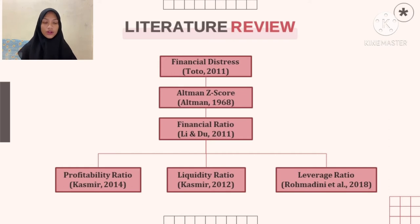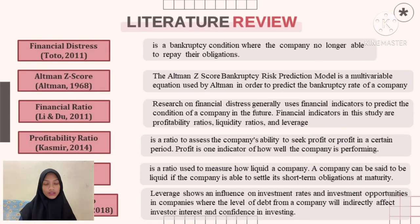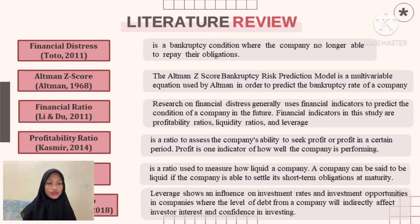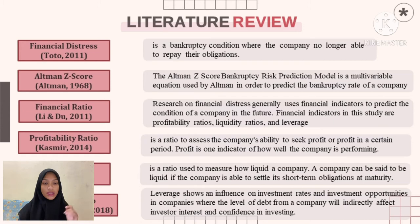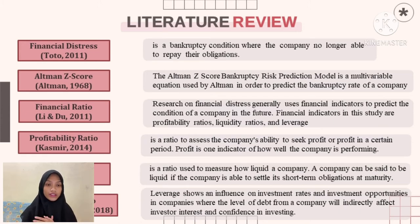Next is the literature review. We can see a diagram that I made. Financial distress studies trace back to 2012, and we use the Altman Z-score for the analysis. We also use financial ratios, which include the profitability ratio, liquidity ratio, and leverage ratio.